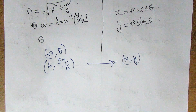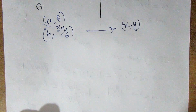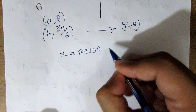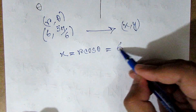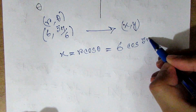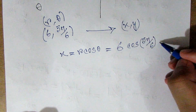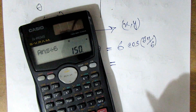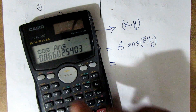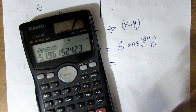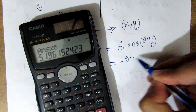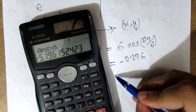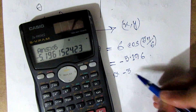So x is equal to r cos theta. So 6 cos(5π/6). Pi means 180, so 180 into 5 by 6, so cos answer into 6. I am getting approximately minus 5.196, so approximately eta equal to minus 3 root 3.